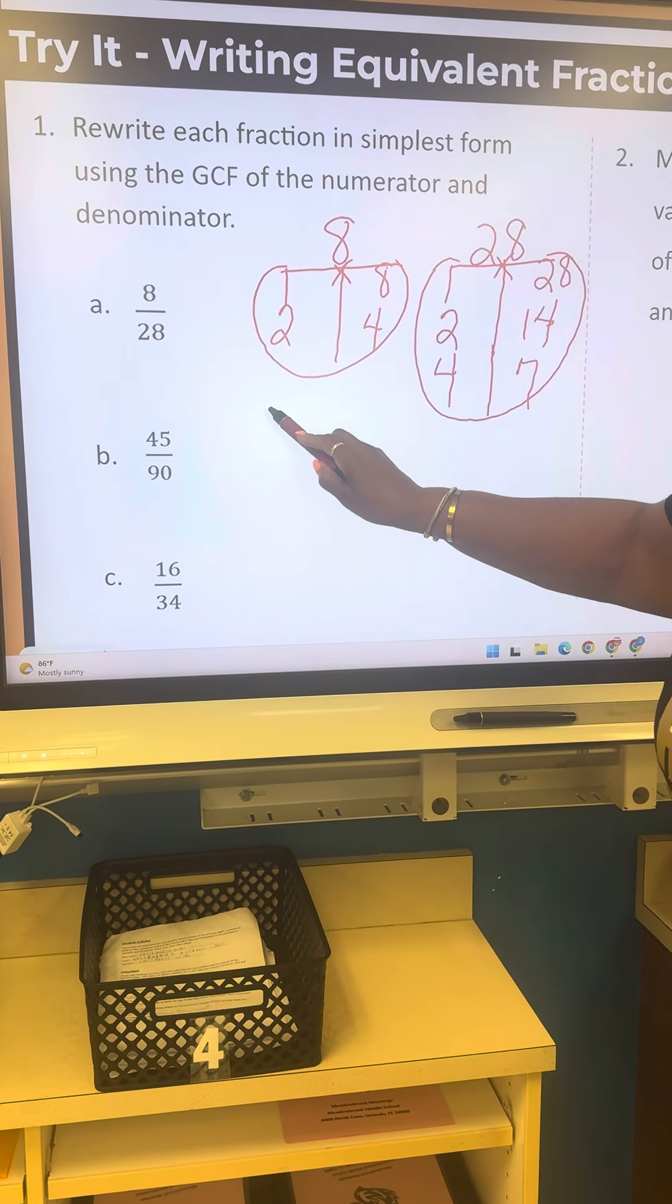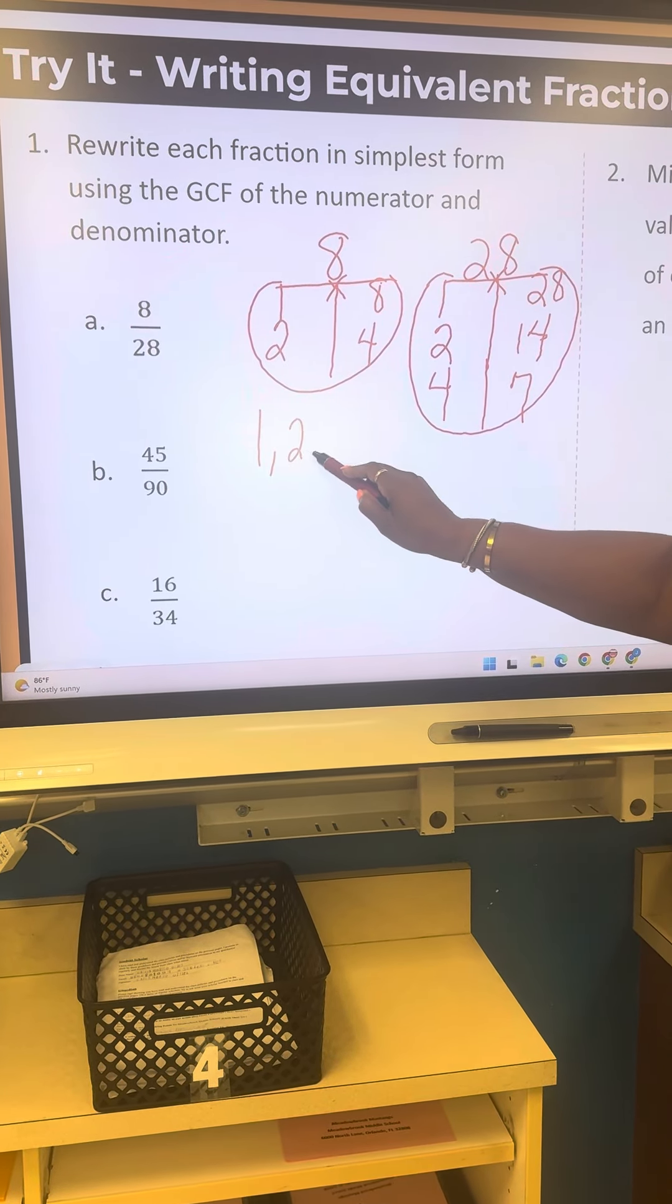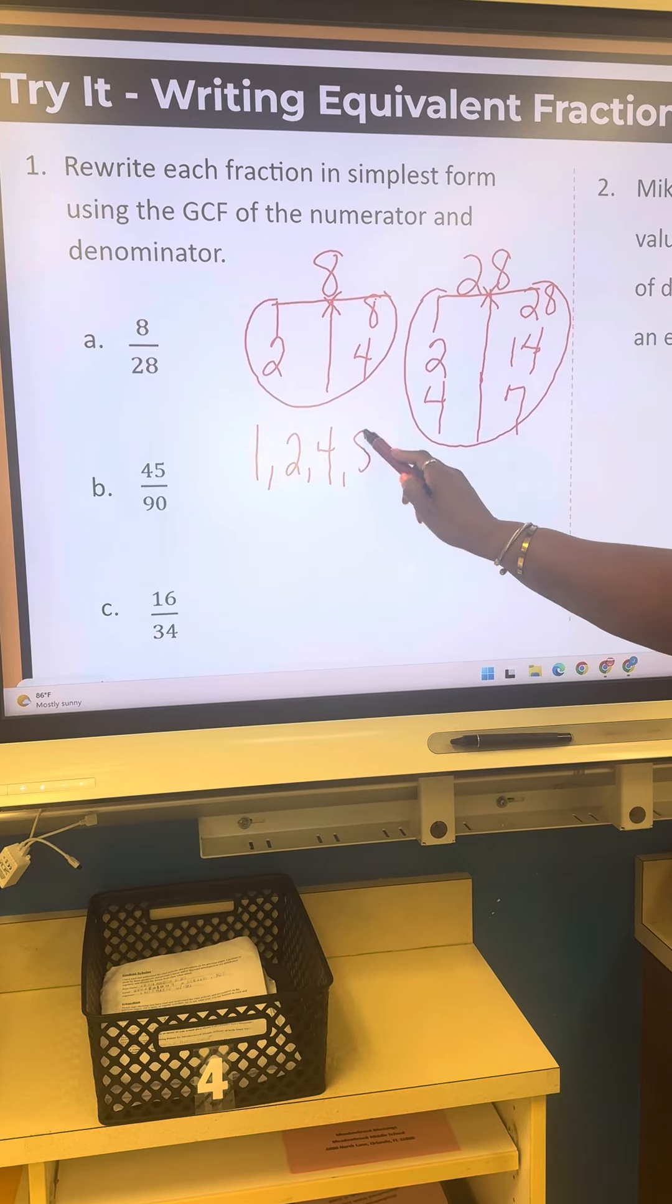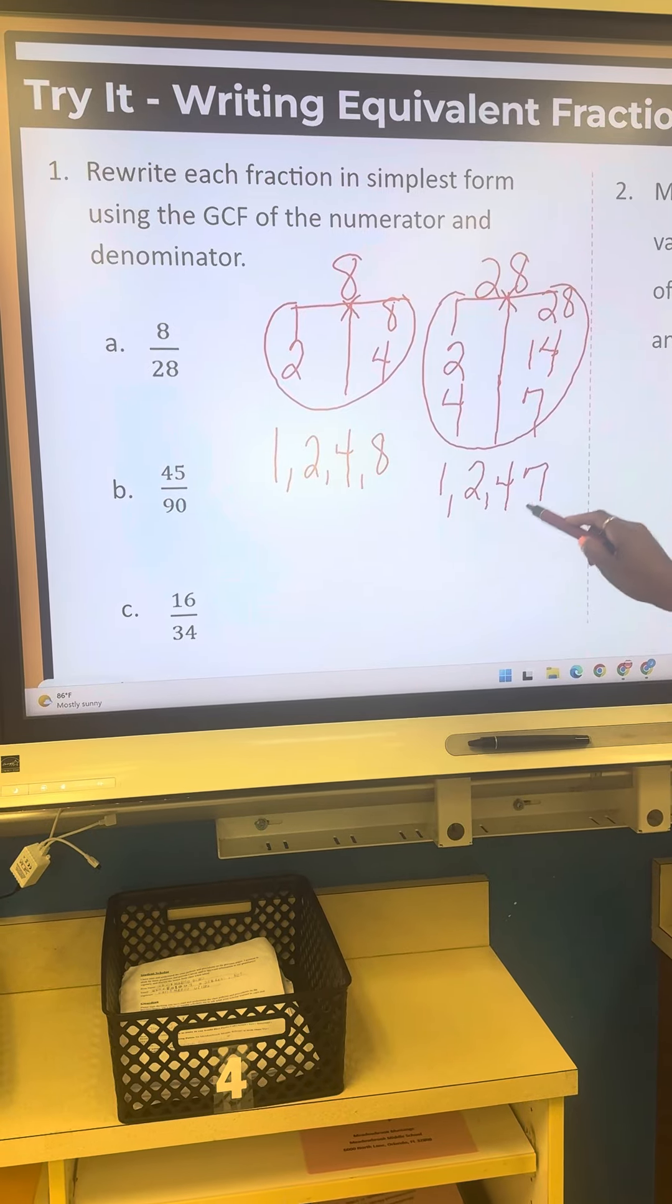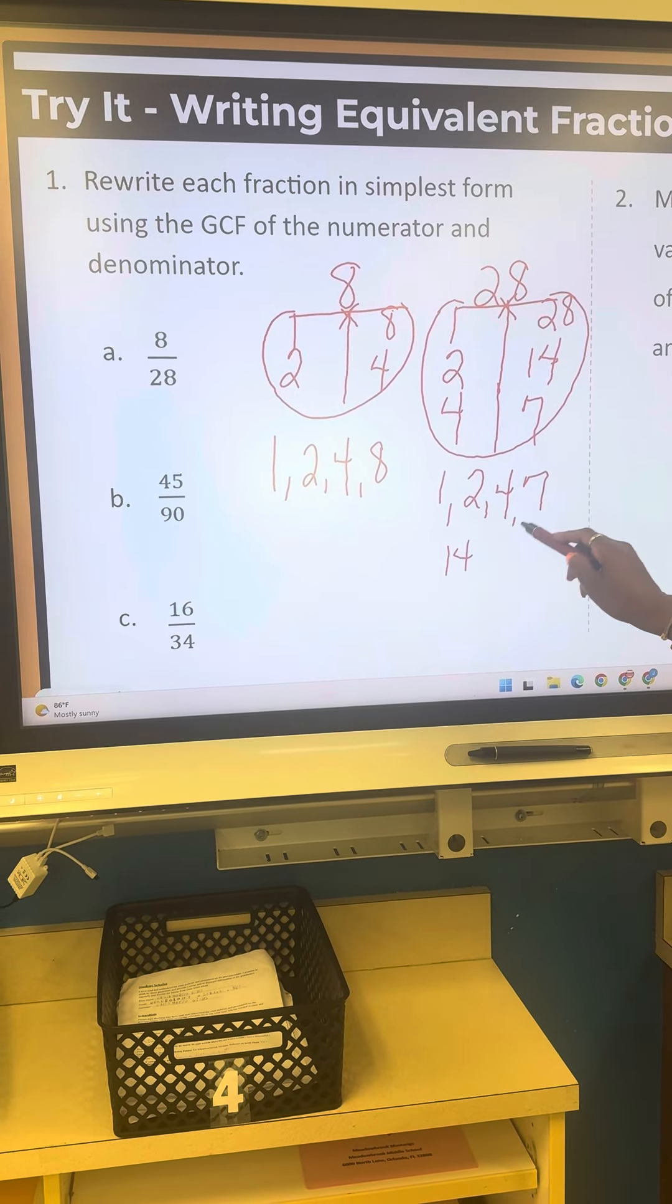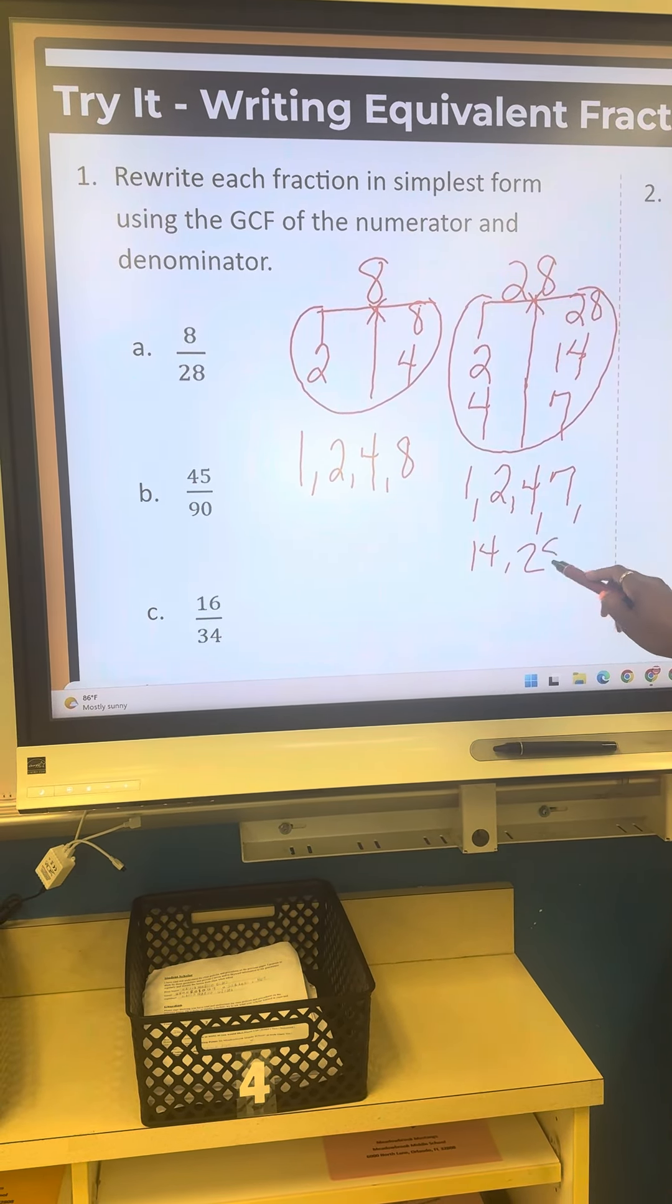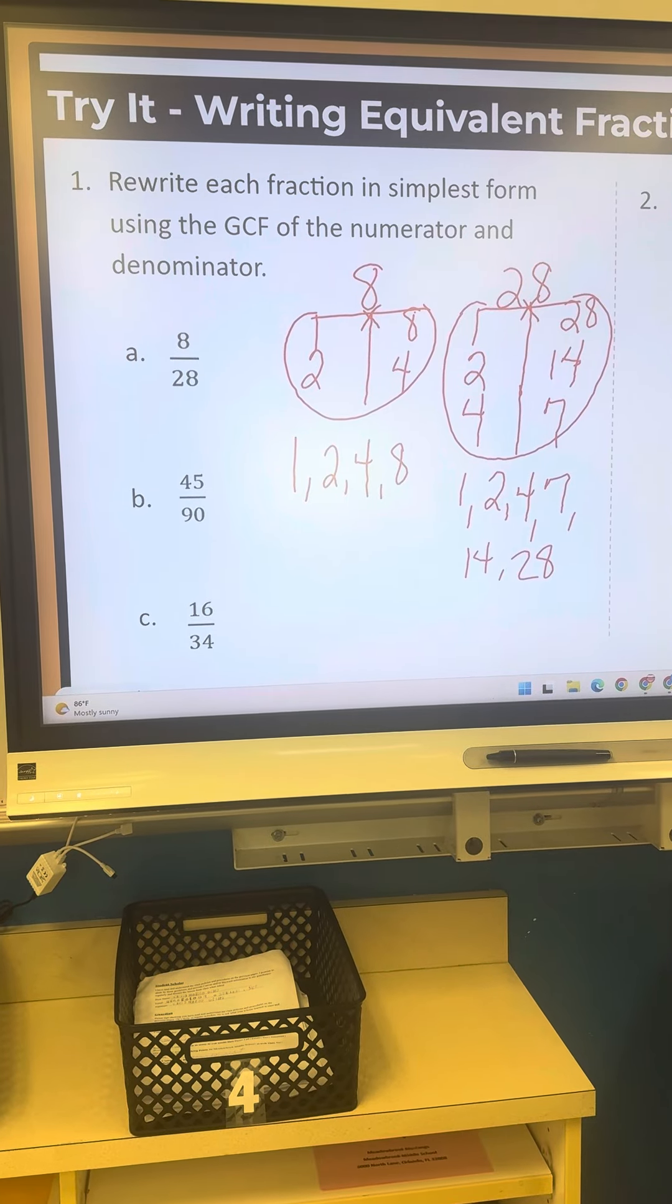So I'm going to write them out. 1, 2, 4, and 8. Those are my factors for 8. 1, 2, 4, 7, 14, and 28 are my factors for 28.